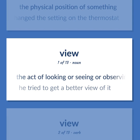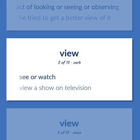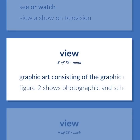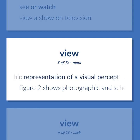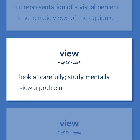View: The act of looking or seeing or observing. He tried to get a better view of it. See or watch. View a show on television. Graphic art consisting of the graphic or photographic representation of a visual percept. Figure 2 shows photographic and schematic views of the equipment. Look at carefully; study mentally. View a problem.